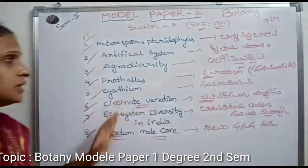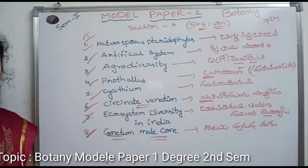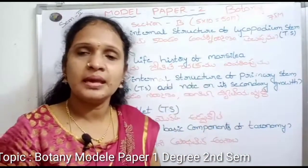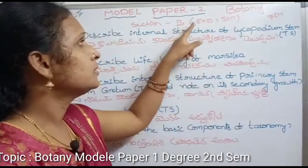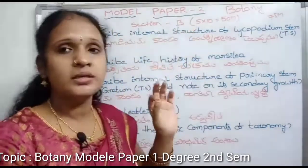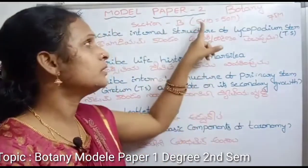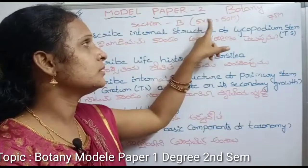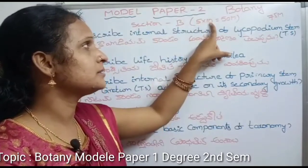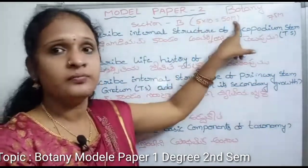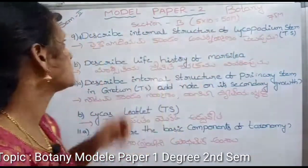This is a short question. Next is Section B — long answer questions, 10 marks each. You select one question from each unit. Each question carries 10 marks, so 5 times 10 is 50 marks.